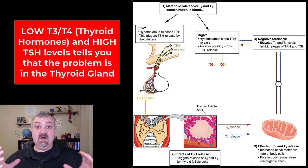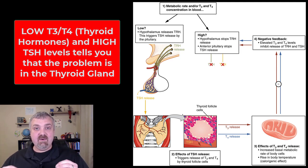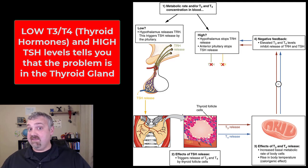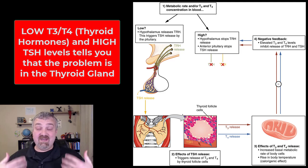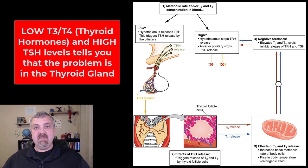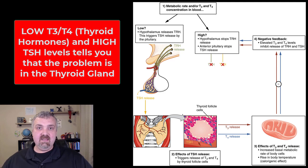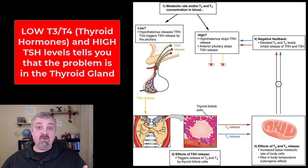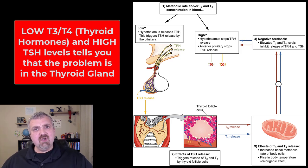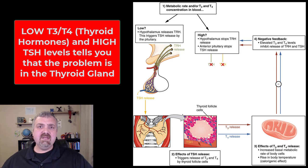High TSH means the hypothalamus is working fine because it's telling the pituitary gland to make thyroid stimulating hormone. It also tells you the pituitary gland is working fine because it's churning out excess TSH, begging the thyroid gland to start making thyroid hormone. So we know in this case the problem is the thyroid gland itself — it could be iodine deficiency or an inflammatory condition. The most common cause of hypothyroidism in the United States is an autoimmune condition called Hashimoto's thyroiditis.